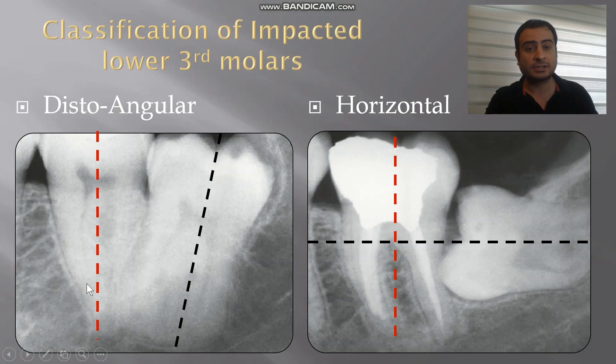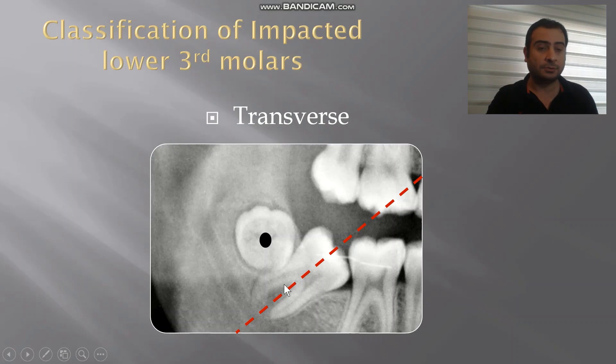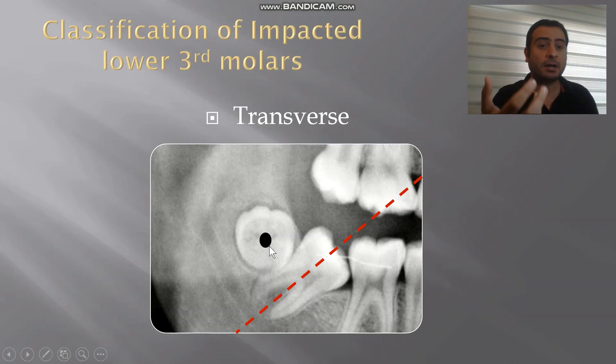In horizontal impaction, the long axis of the third molar is perpendicular to the long axis of the adjacent tooth. The last classification is transverse, where the third molar is in a horizontal angulation — in some instances giving a bull's-eye appearance of concentric rings on the radiograph. It could be in a buccal-lingual direction, with the crown on either the buccal or lingual side.